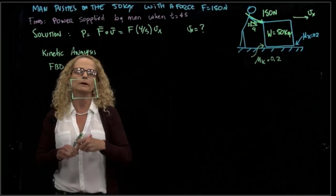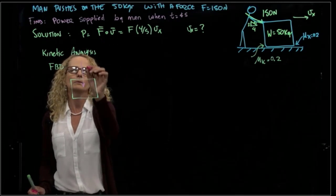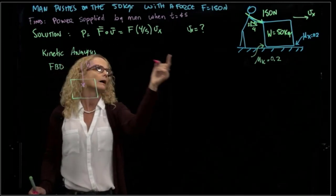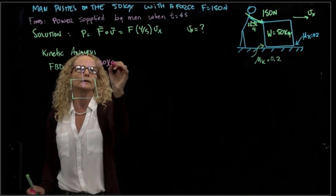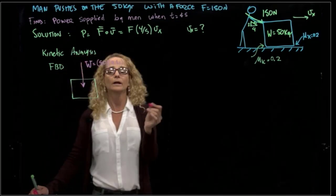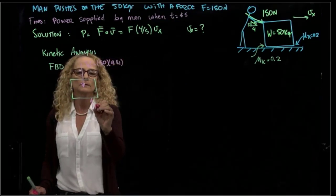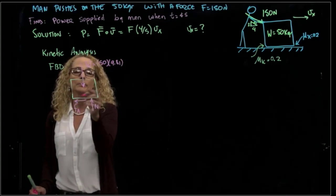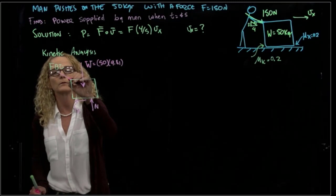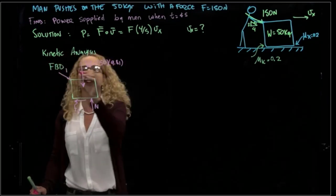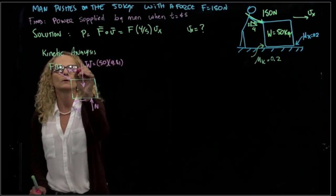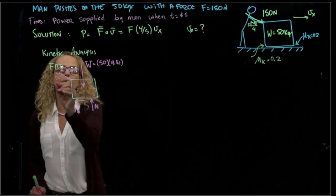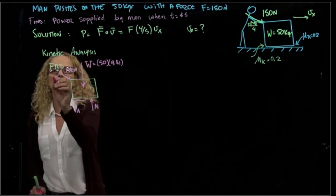In our free body diagram, always start with the weight. We put it first, not to forget, which is 50 kilograms times gravity. And then, we have the normal force, and then we have the friction force. If we are pushing in that direction, because we have a force right here, which is 150 Newtons, and that angle is known, right? That angle is 43.5 degrees.